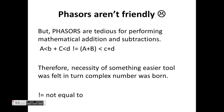That's it about phasor representation. However, phasor expressions are not convenient because they are tedious for mathematical addition and subtraction. For example, a∠b plus c∠d is not equal to (a+c)∠(b+d). Therefore, the necessity of something easier was felt, and in turn the complex number was born.